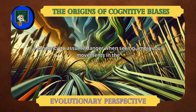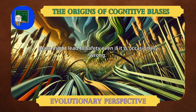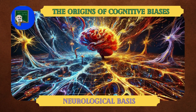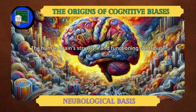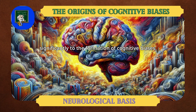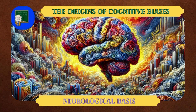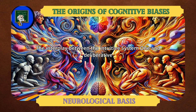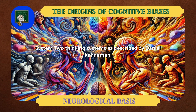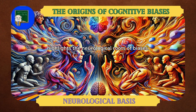For instance, a tendency to assume danger when seeing ambiguous movements in the grass might lead to safety, even if it is occasionally wrong. Neurological Basis: the human brain's structure and functioning contribute significantly to the formation of cognitive biases. The interplay between the intuitive System 1 and deliberative System 2 thinking systems, as described by Daniel Kahneman, highlights the neurological roots of biases.